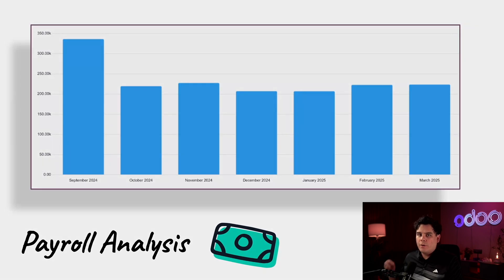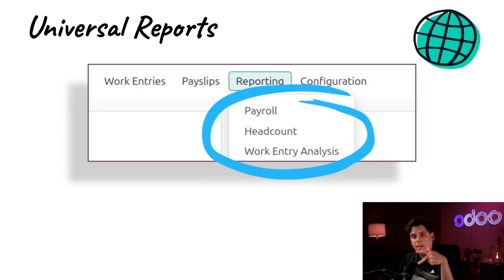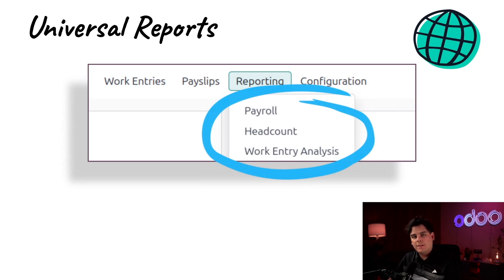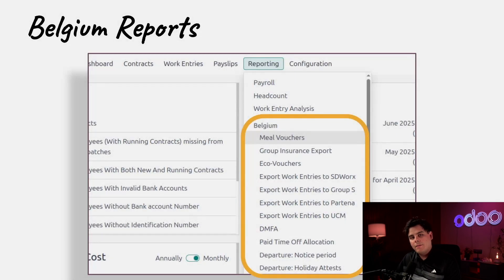There are three universal payroll reports that are available by default: the payroll analysis, headcount, and work entry analysis reports. Additional reports may be available based on the installed payroll localization. For example, the United States localization has an additional W-2 report and an ADP export report, while the Belgium localization has a lot of specialized reports.